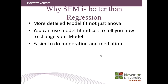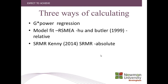Another advantage of using AMOS is it's easier to do moderation and mediation. So there are three ways of calculating the sample size: you can do the bog standard G Power regression, you can do a model fit index such as RMSEA — most famously from the MacCallum paper — which is a relative measure that takes the null hypothesis and compares it to your experimental hypothesis and is therefore seen as being independent of sample size.